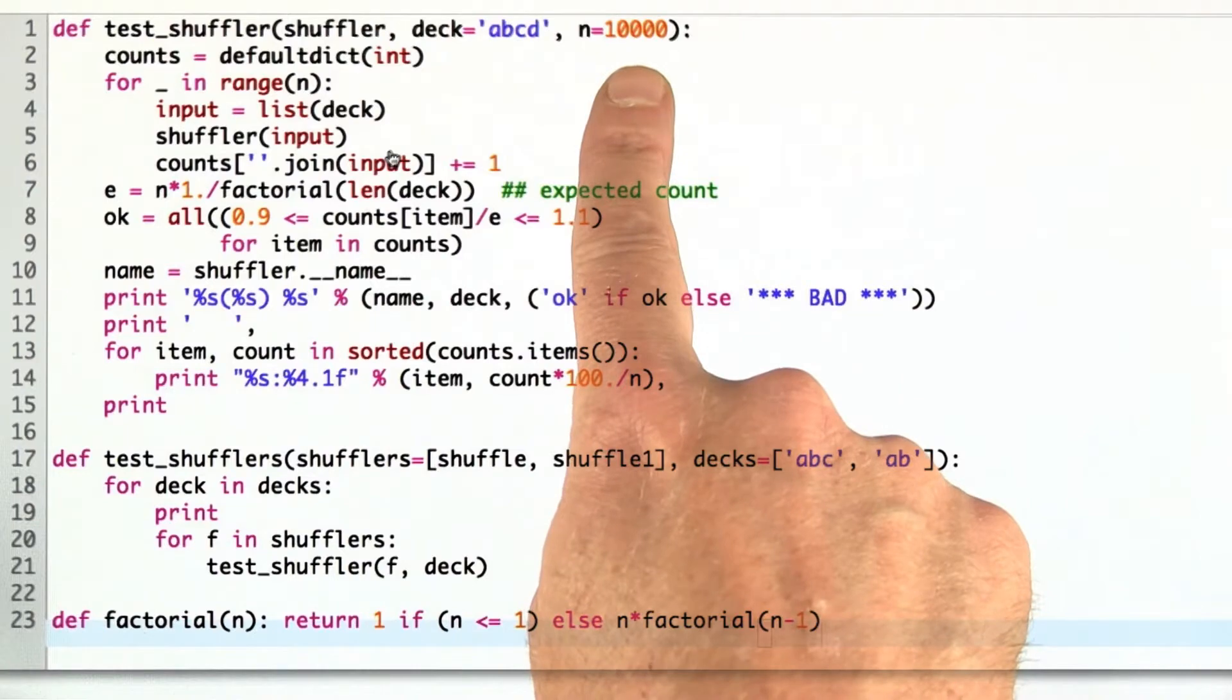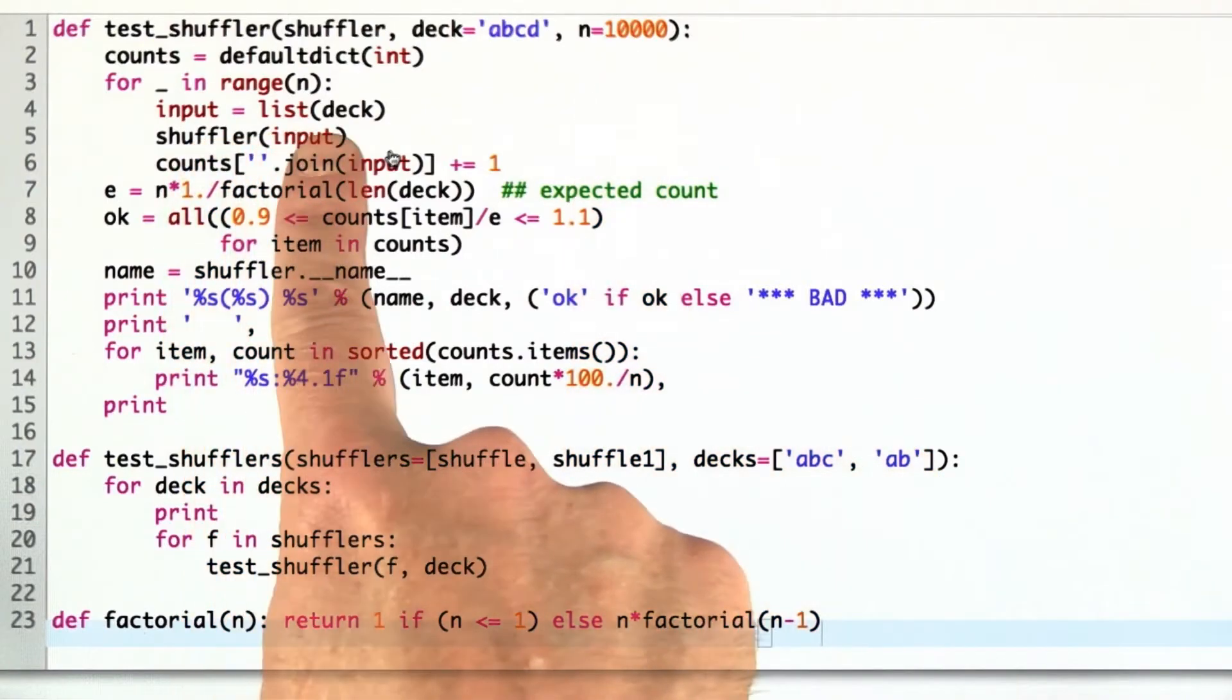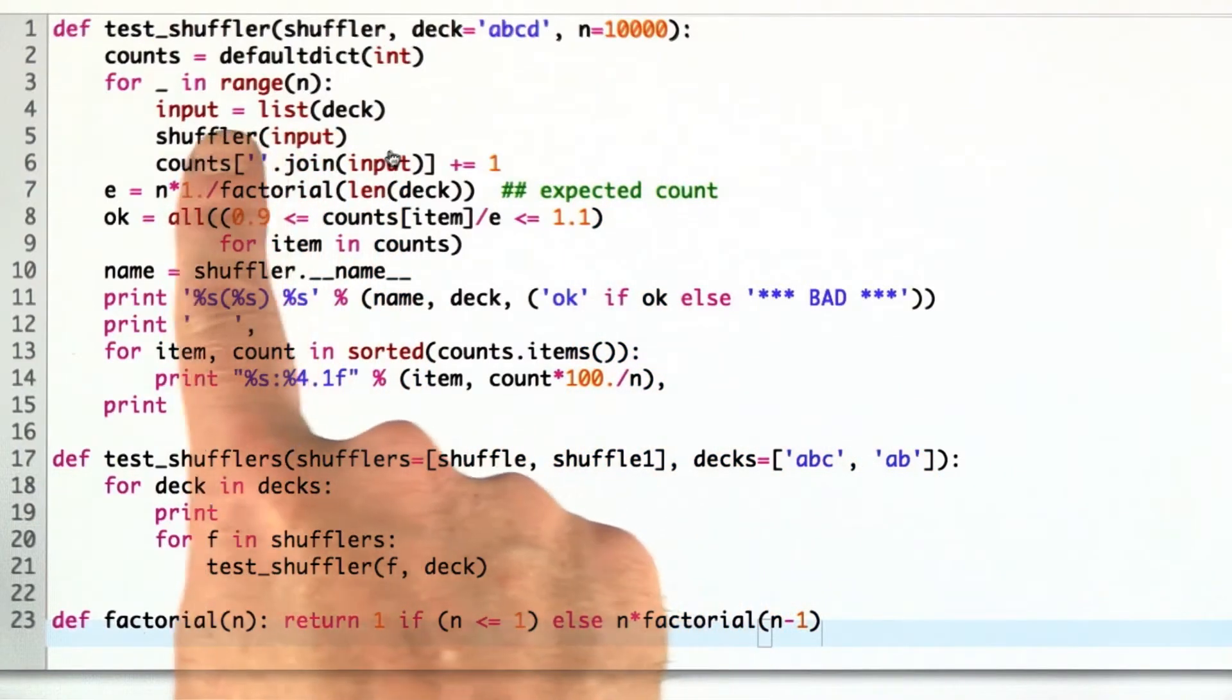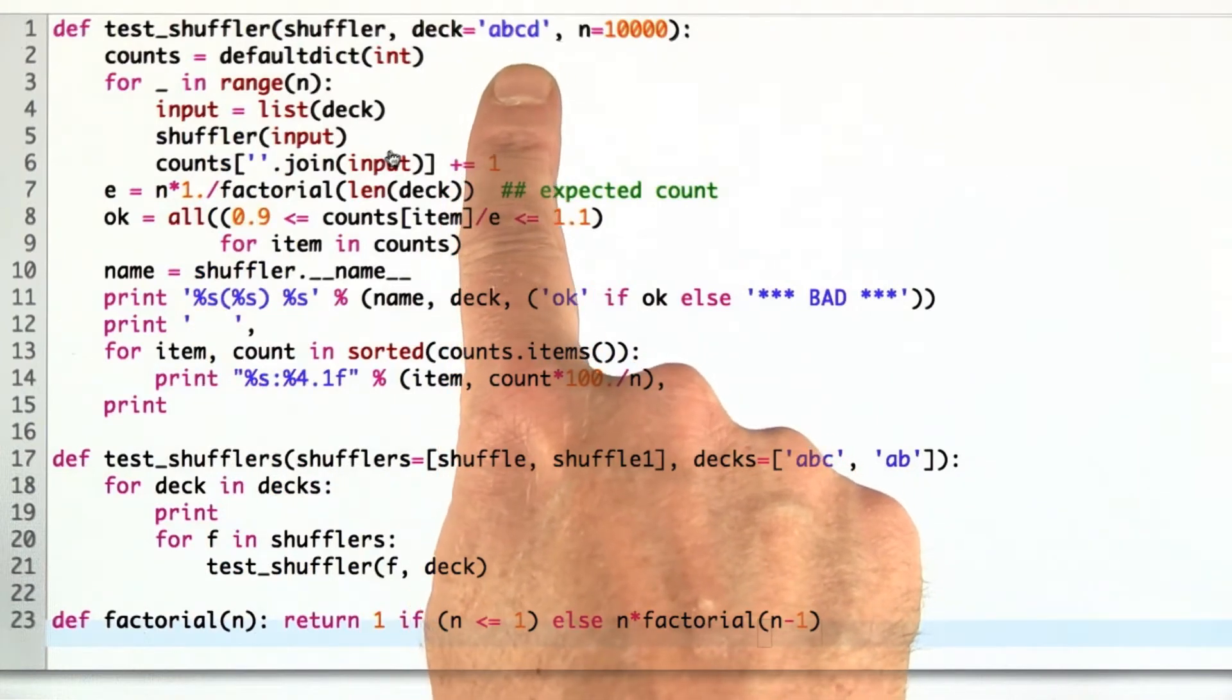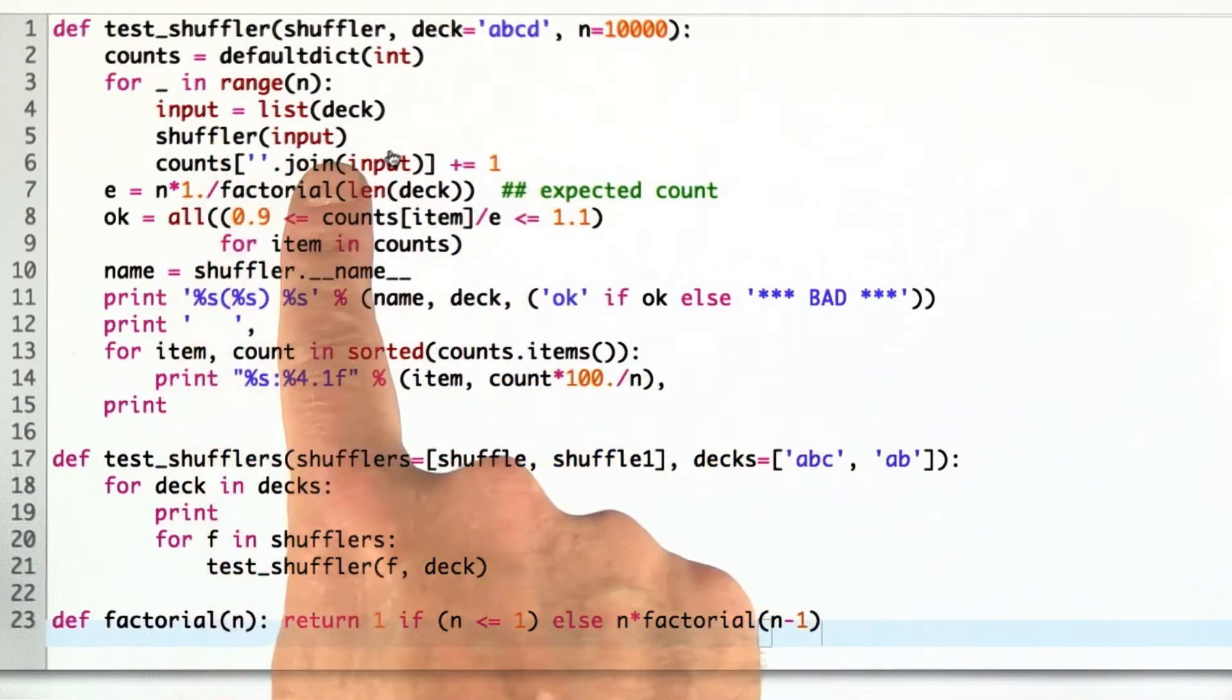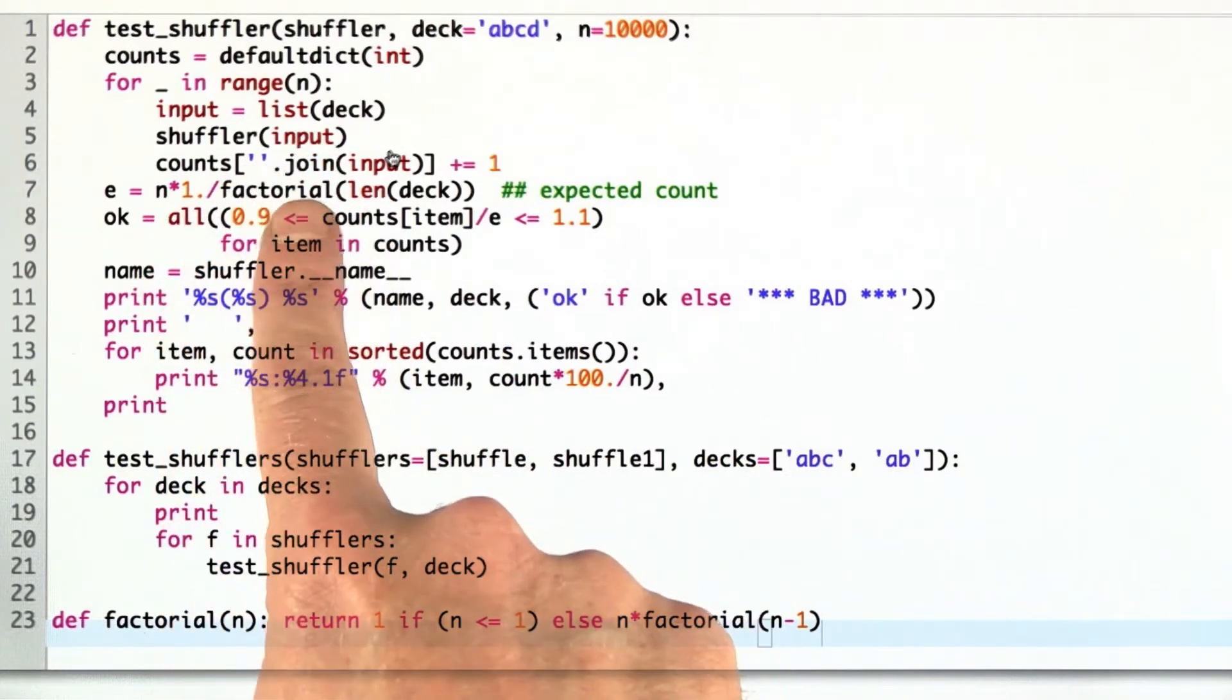By default, we're going to go 10,000 shuffles. We're going to make a list out of the deck that we get passed in. The deck is just a string of characters. That's the simplest thing to show. Then we're going to shuffle the input and then count the result.